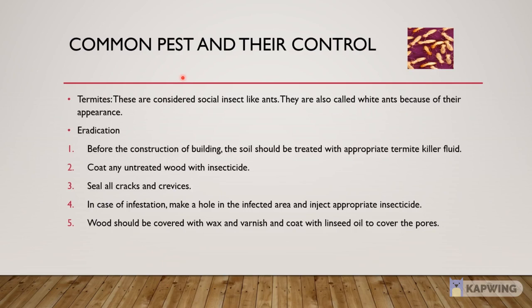The next common pest is Termites. These are considered social insects like ants. They are also called white ants because of their appearance. Control methods: 1. Before the construction of a building, it is recommended that the soil should be treated with appropriate termite killer fluid. 2. Unpolished or untreated wood should be coated with insecticide. 3. Seal all the cracks and crevices. 4. In case of infestation, make a hole in the infected area and inject appropriate insecticide. 5. Wood should be covered with black sand varnish and coated with linseed oil to cover all pores.